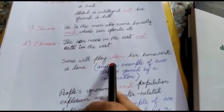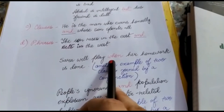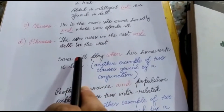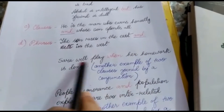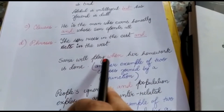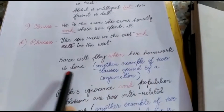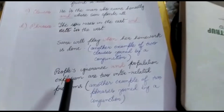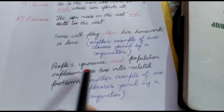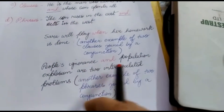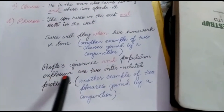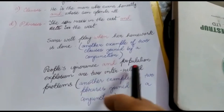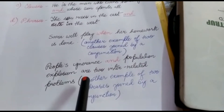Here you can see how the conjunction 'when' is joining two different clauses: 'Sara will play when our homework is done.' Here also, the conjunction 'and' is joining two different phrases: 'people's ignorance and population explosion.'